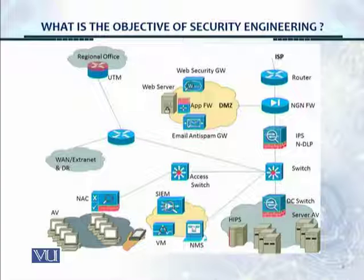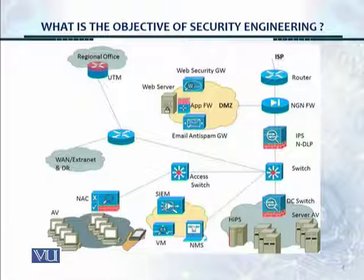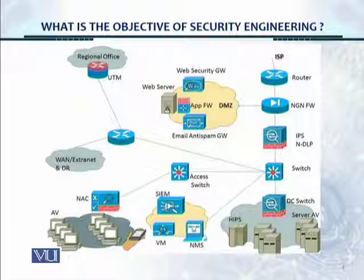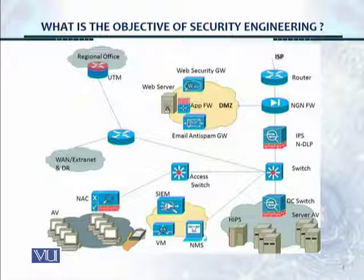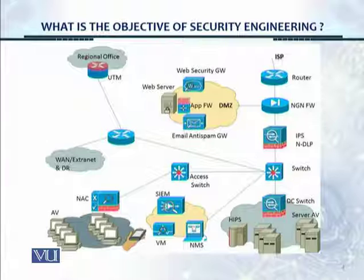This is the overall architecture of a typical enterprise network. There is a router and a next-generation firewall, with a DMZ connected to it, then the IPS, and after that a network DLP device to detect data loss through the network. On the left side of the screen, there is a UTM connecting to a regional office with an IPSec VPN tunnel established. On the lower right, there is a data center switch with a firewall.